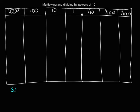Let's start with 327 and 9 tenths and multiply it by 10. I'll write that into my place value chart — 327 and 9 tenths. Now when I multiply by 10, my number is going to get larger, and each of my digits is going to move one place to the left on the place value chart. So 9 tenths is going to become 9 ones.